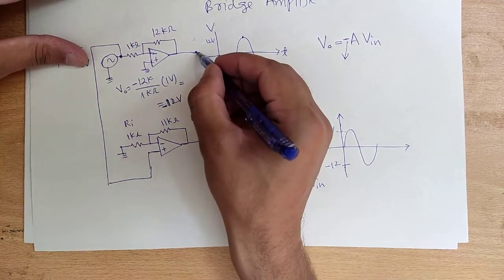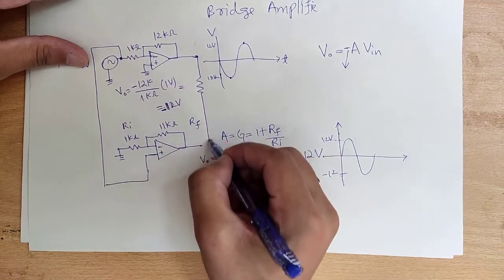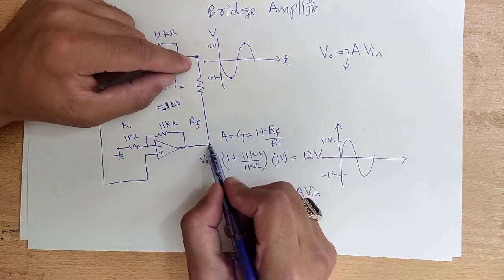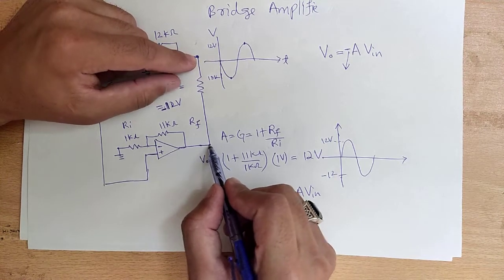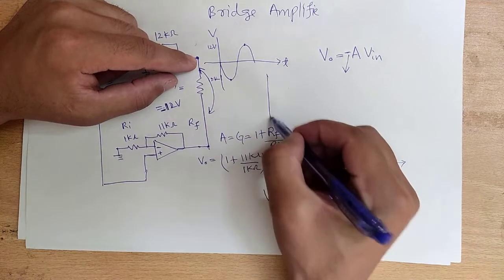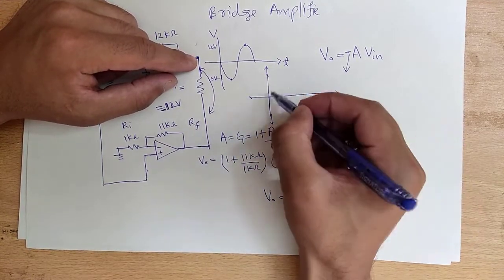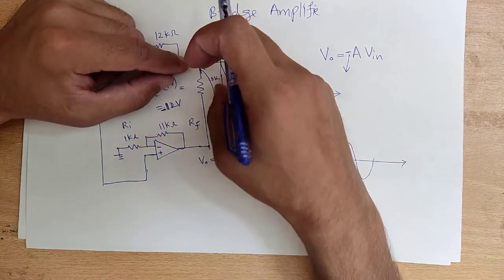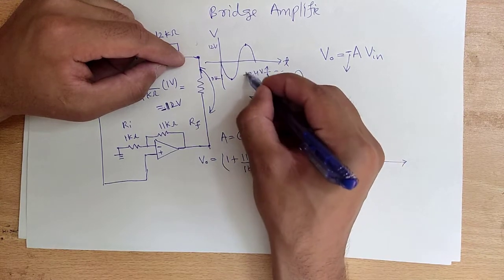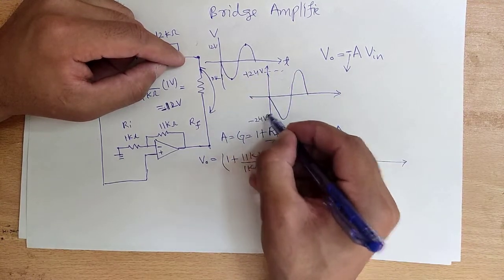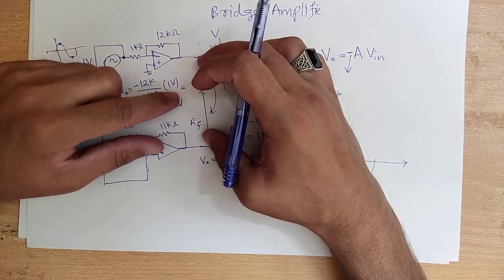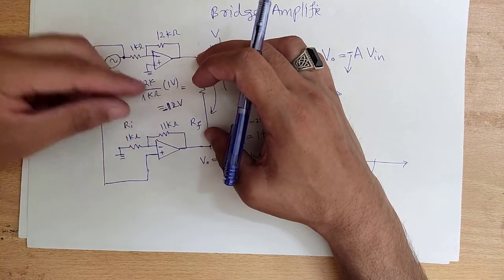If we place our load between the output of the inverting amplifier and the output of the non-inverting amplifier, the load will see a signal of ±24 volts. Taking a reference at one output point and measuring across both outputs, we get 24 volts peak and -24 volts peak.